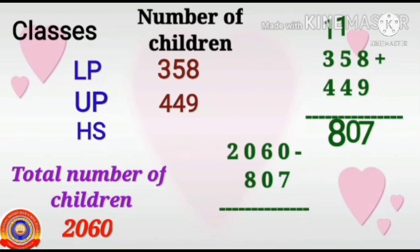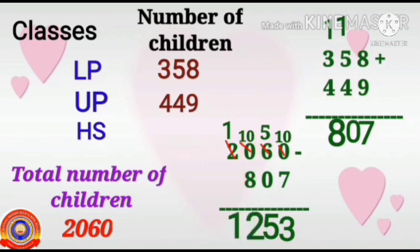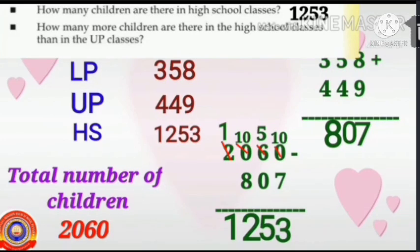Subtraction of 7 from 0 is not possible. So, borrow 1 from 6, then 0 becomes 10 and 6 becomes 5. 10 minus 7 is 3. 5 minus 0 is 5. We can't subtract 8 from 0, so borrow 1 from 2, then 0 becomes 10 and 2 becomes 1. 10 minus 8 is 2, and write 1 here. The result is 1,253. So, how many children are there in high school classes? 1,253.